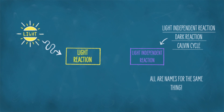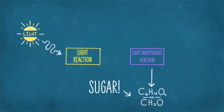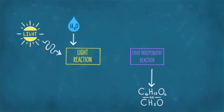What we know so far is that light goes into the light reaction, and there is also a light-independent reaction. In the end, sugar, CH2O, comes out of the light-independent reaction. Now let's go back to the light reaction for a moment. Water, H2O, goes into the light reaction.